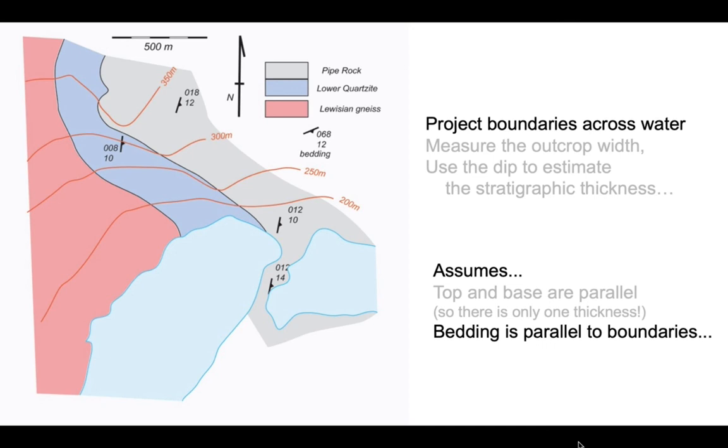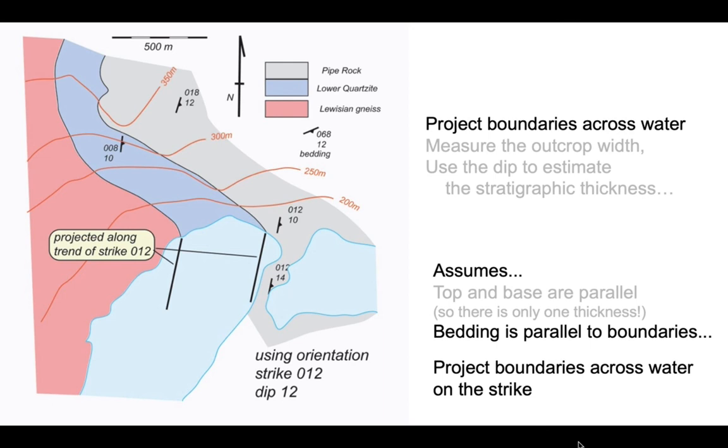Okay so let's get going. Our first thing to do is to project the boundaries of the lower quartzite, its top and its base, across the water and we're going to use this bedding orientation to do this. Now we only need to use one bedding orientation and if we look at the range of values on the map they're all more or less in the same ballpark. So we're going to use a single orientation which is a strike of 012 and a dip of 12 degrees which will be towards the east.